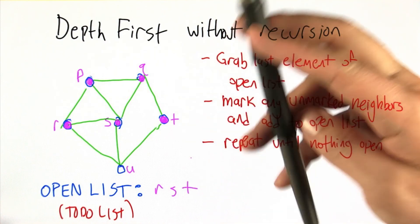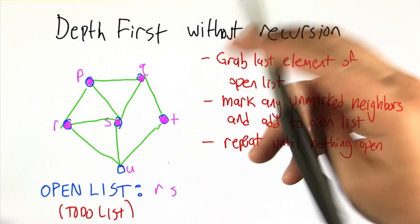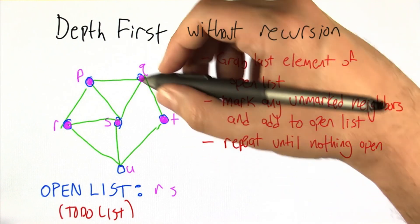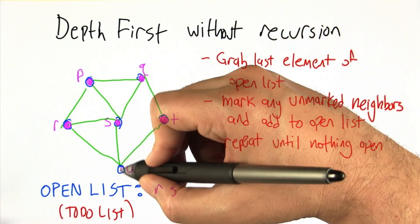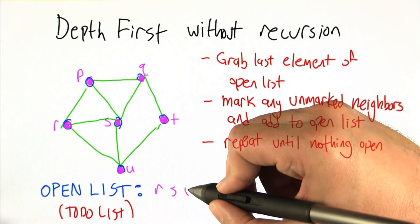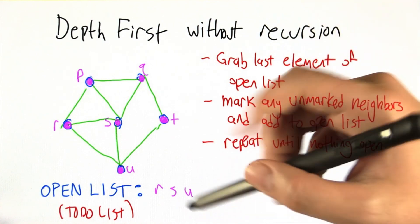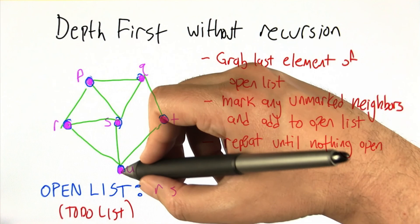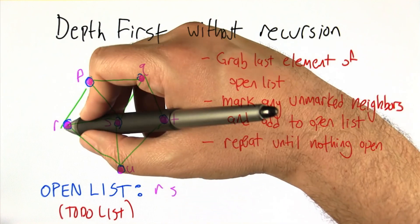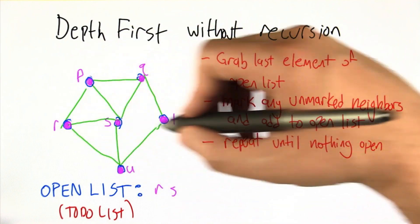We go back to the beginning and do it again. Grab the top thing off the to-do list, which is T. Check all its neighbors, Q and U. Only one of them hasn't been visited and that's U — we mark it and add it to the to-do list. We repeat again: grab the last thing off the to-do list, which is U. Look at all the neighbors of U: R, S, and T. They've all been marked.